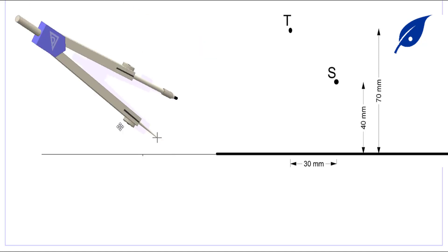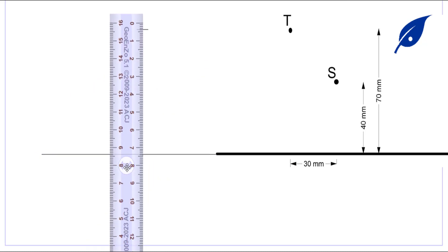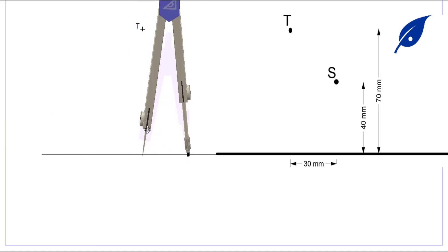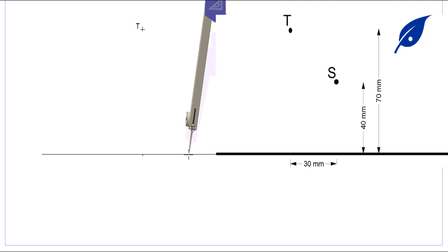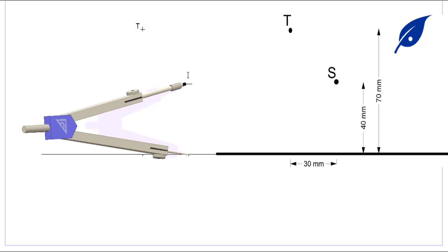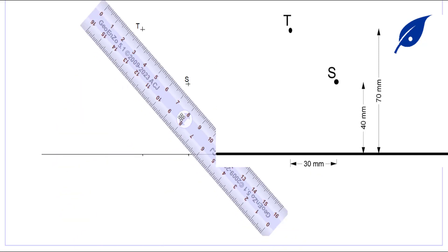Welcome to this tutorial. Today we shall be considering this question: the construction of a circle to touch a given line XY, to pass through the points T and S. From the given question the required dimensions are stated from this picture, so we start the construction by drawing the horizontal line and marking the points T and S at the required distance.